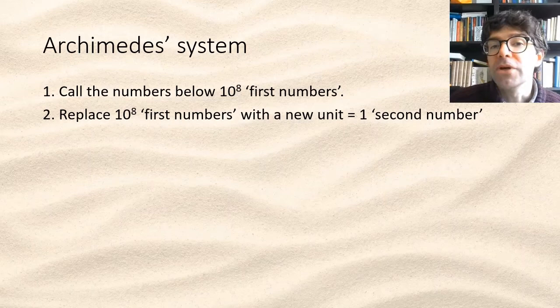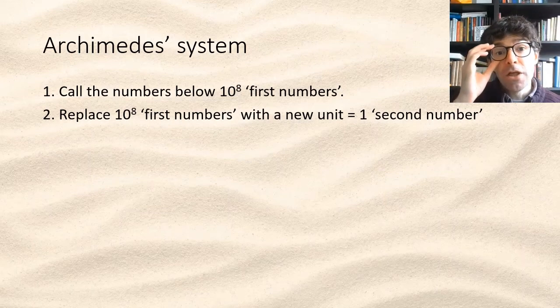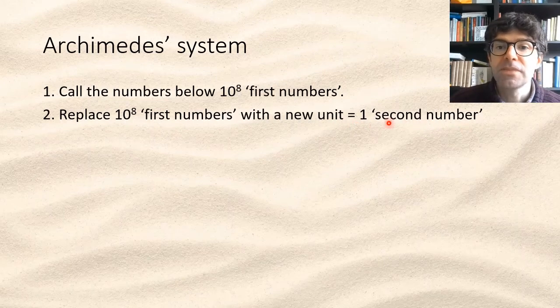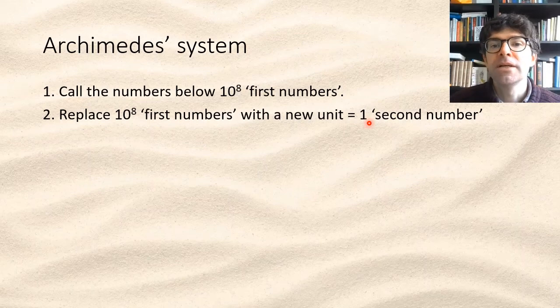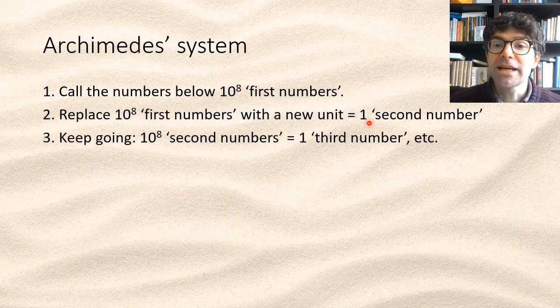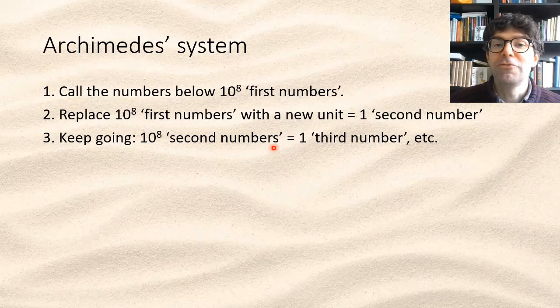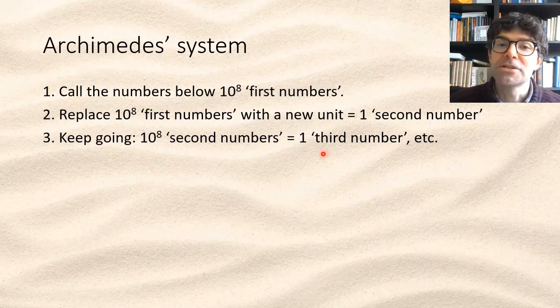To go beyond this, Archimedes proposes that we call a hundred million the unit of a new class of number, which he calls second numbers. For example, two hundred million would be two second numbers. Then ten to the power eight, a hundred million second numbers, becomes the unit for the class of third numbers, and so on.